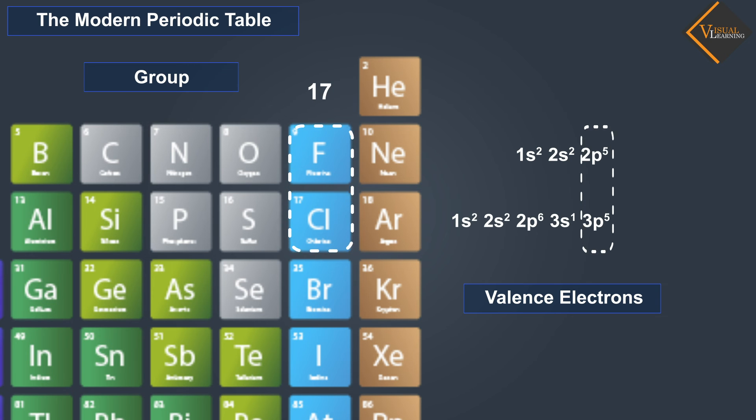Hence, we can say that groups in the periodic table signify an identical outer shell electronic configuration.